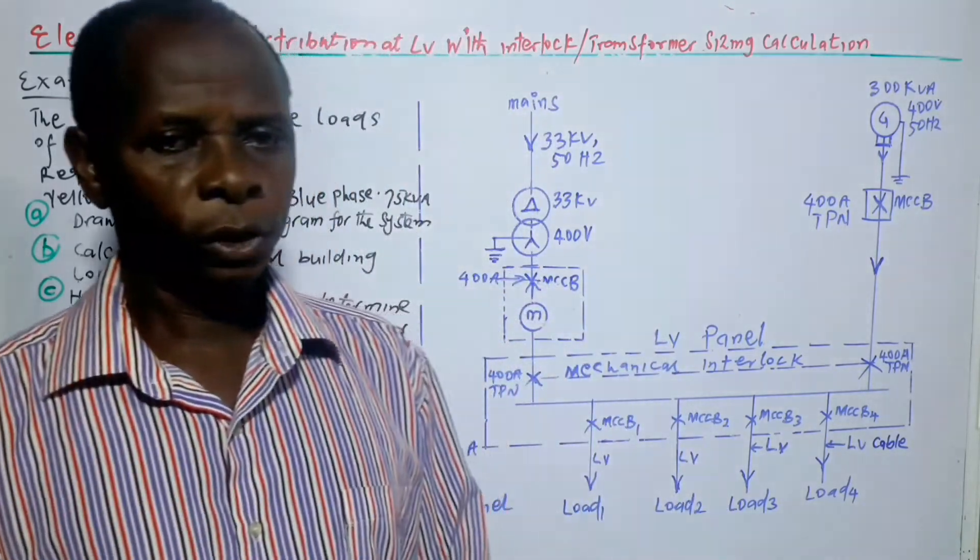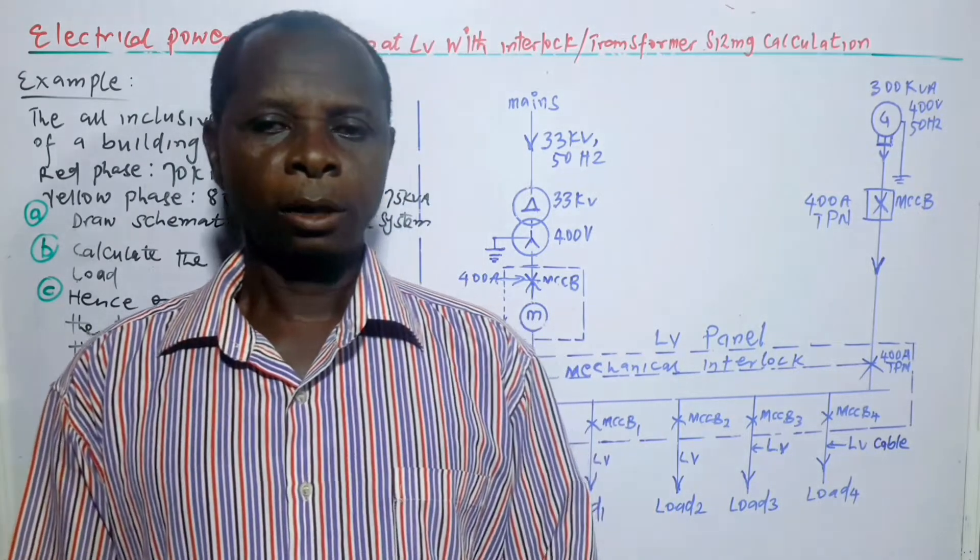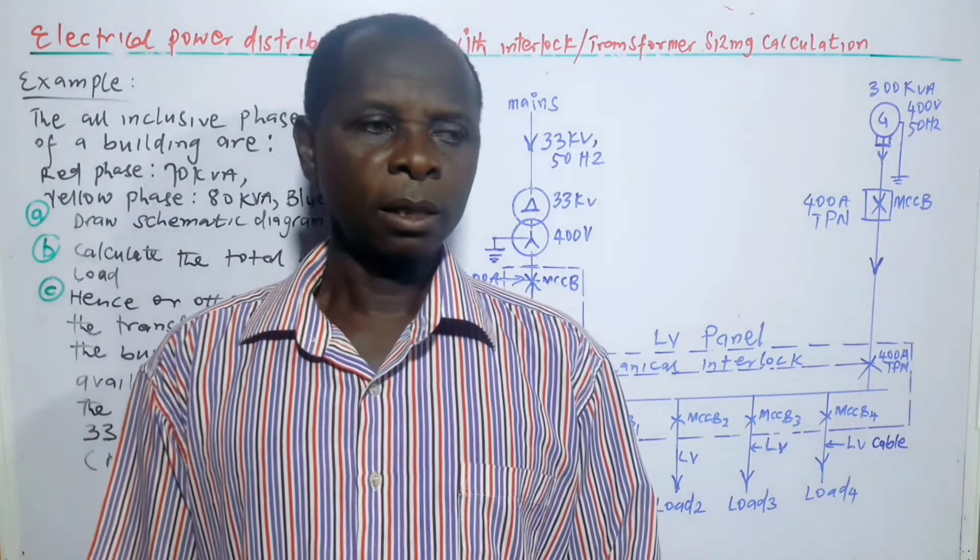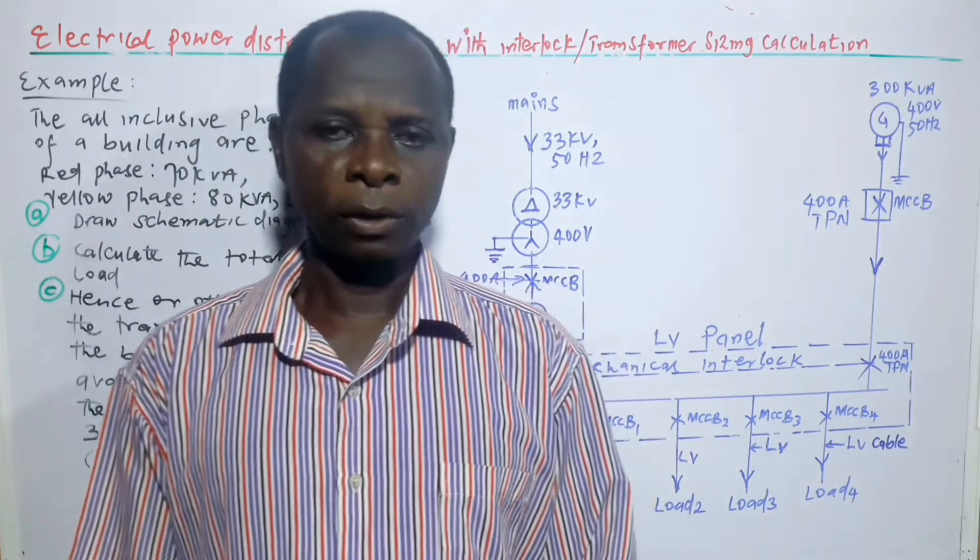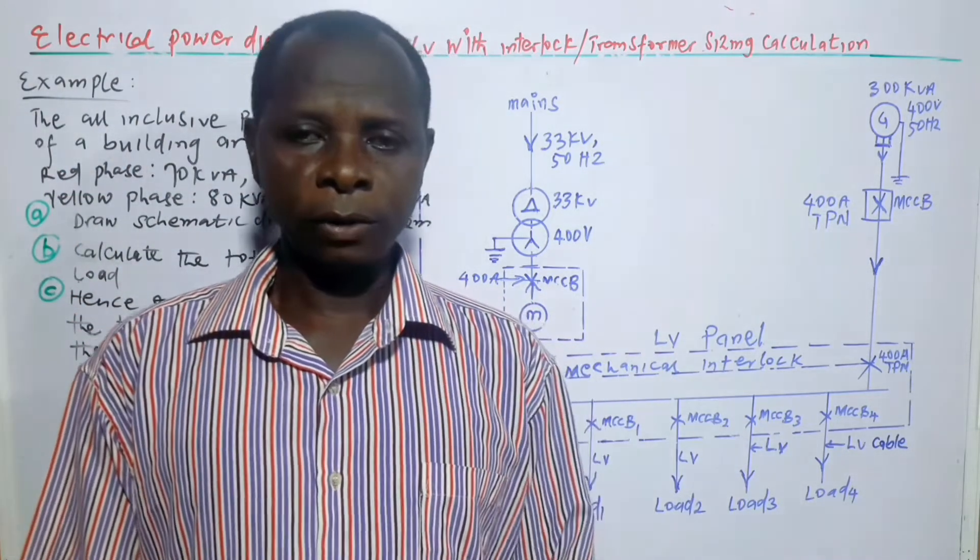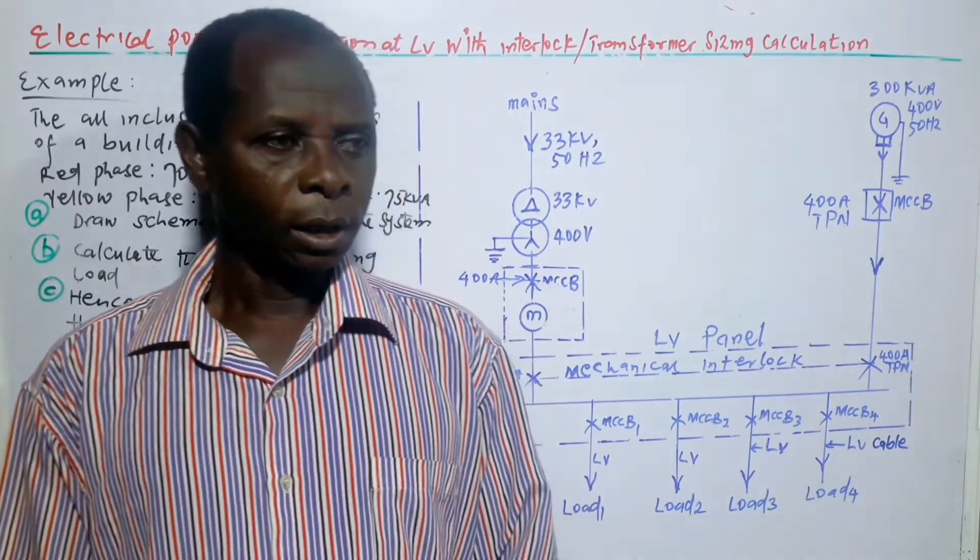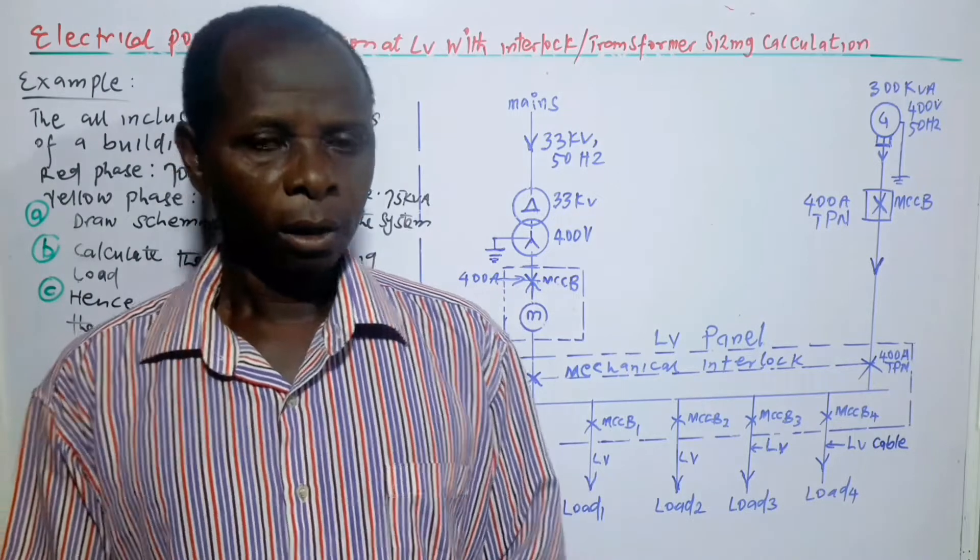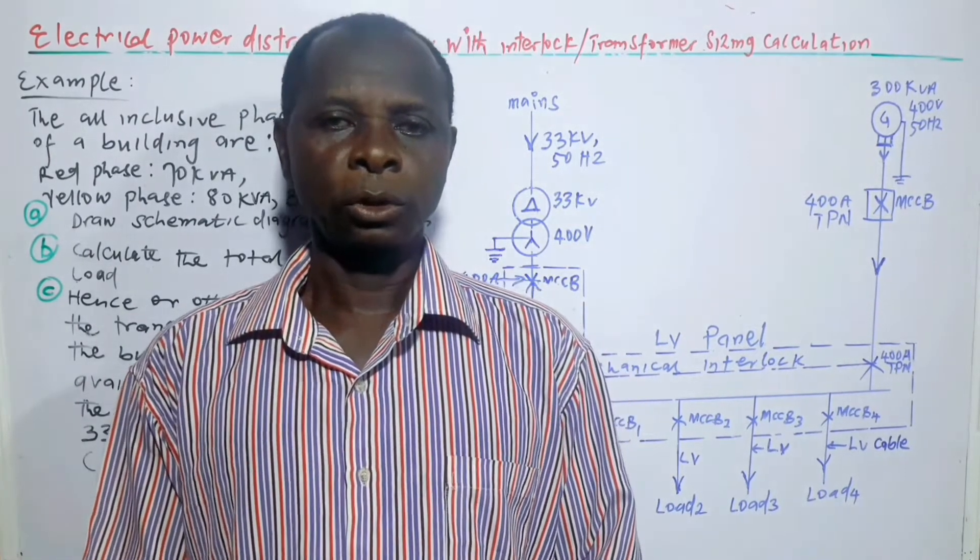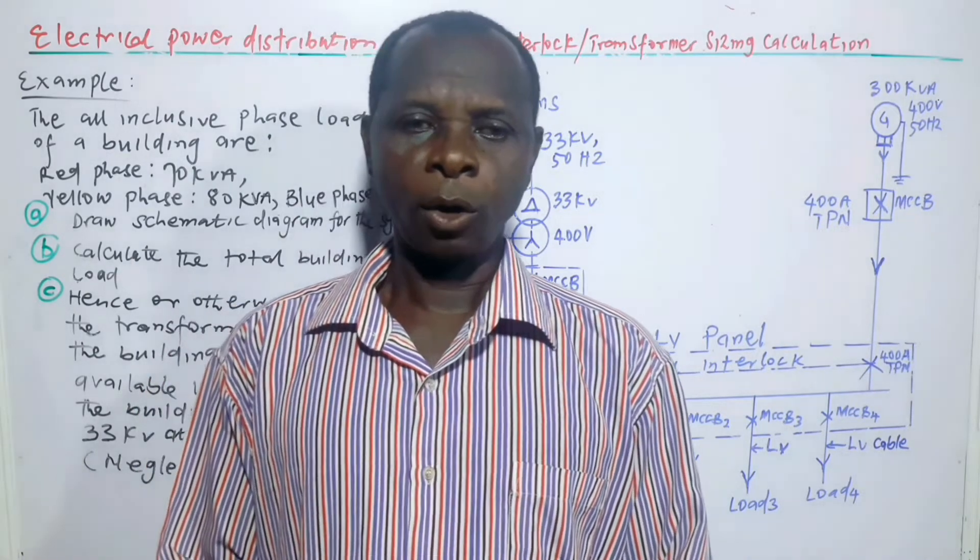Welcome to JK Solutions channel. This video is all about electrical power distribution system and transformer sizing calculations at low voltage. In some of my previous videos, power distributions were done at medium voltages, mainly 11 kV or 33 kV, but in this situation the supply transformer has 33 kV stepped down to 400 volts for distribution at low voltage. If you have not subscribed to my channel, please do so and hit the notification bell.